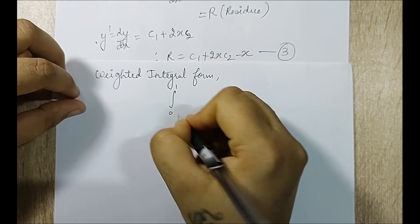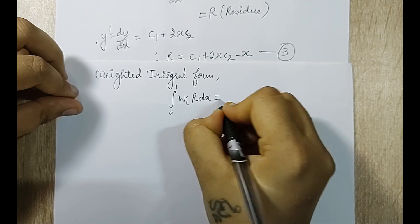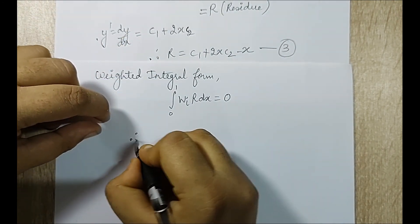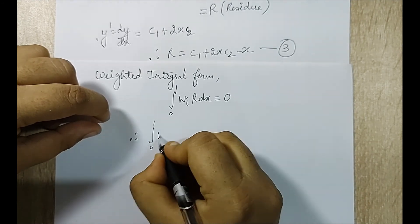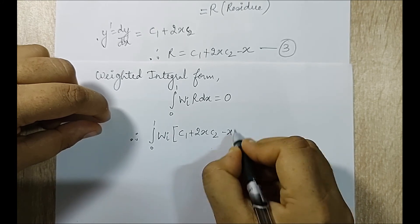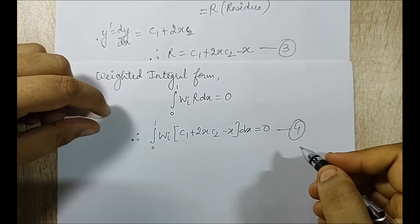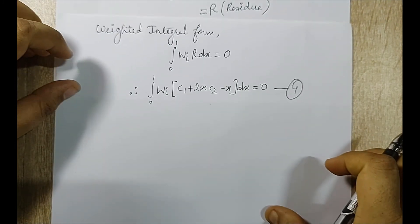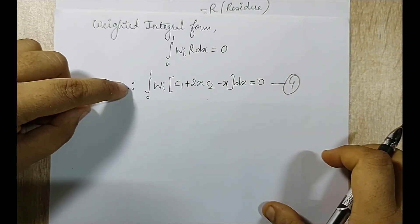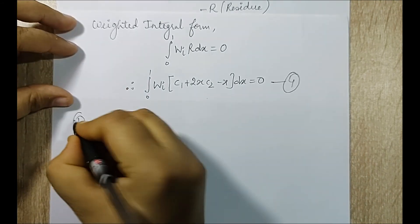Next I write the weighted integral form: the integral from 0 to 1 of wi * R dx = 0, since the domain is from 0 to 1. Substituting R, I get: integral from 0 to 1 of wi * (c1 + 2x*c2 - x) dx = 0. I mark this as equation 4. Now I will start using all the non-weak form methods to find c1 and c2.